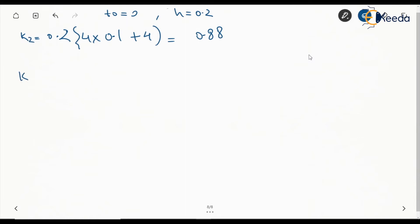K₃ is going to be h times f(t₀ + h/2, x₀ + K₂/2). Again, it is independent of x. This is 0.2 into 4 into, again t₀ is 0, h/2 will become 0.1, so 0.1 plus 4. So this is again going to be 0.88.